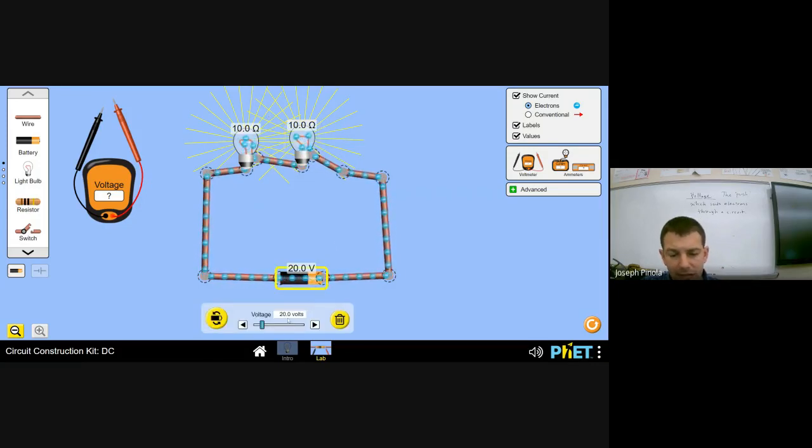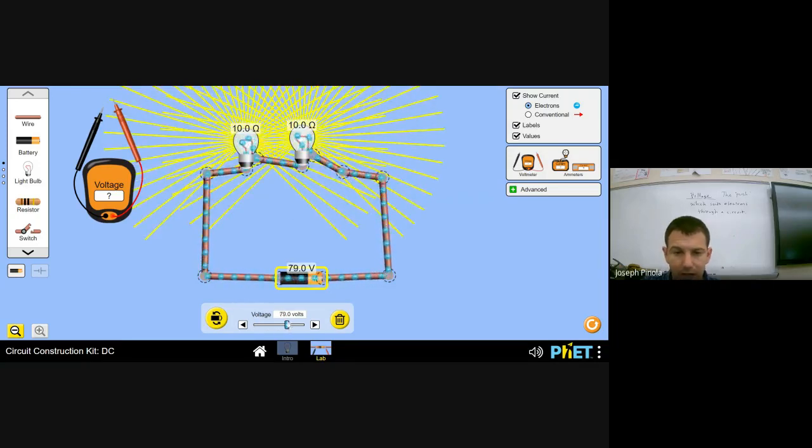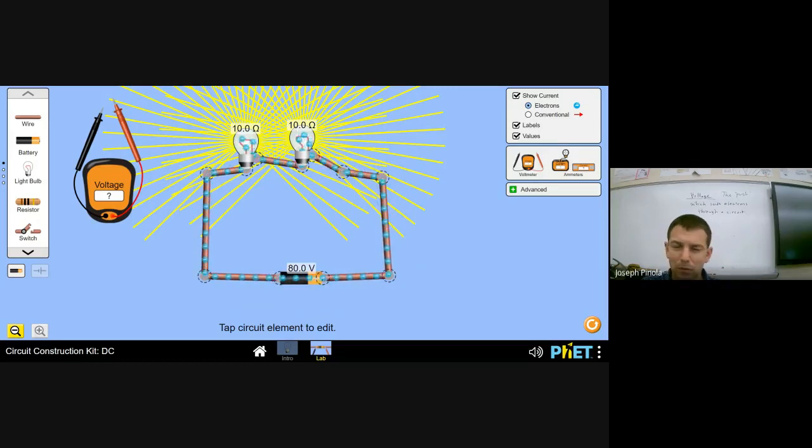If I was to take the battery and increase the voltage, that would mean that the light bulbs will burn brighter, and the current will increase. Let's have a look. I increase the voltage, and you can definitely see that the light bulbs got much brighter. So, right now, our light bulbs are very bright, and my battery is giving off 80 volts of potential difference, or voltage.